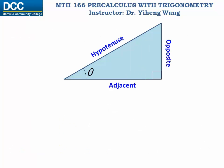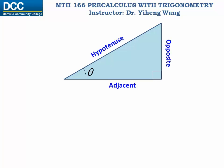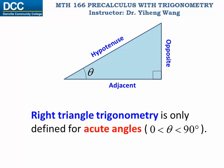At this point you probably have noticed that although the right triangle definition for trigonometry is very easy to understand, it can only be used for acute angles — in other words, angles that are between 0 and 90 degrees. This is because any other angle cannot be represented using a right triangle. But we do wish to have a more general definition, and we're going to do that in the following videos.